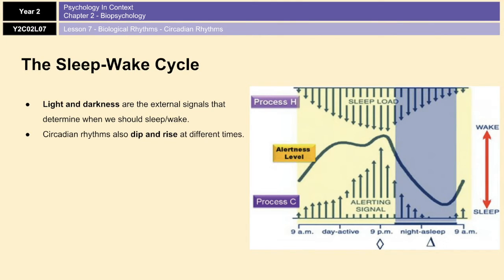Now, circadian rhythms also dip and rise at certain times of the day. Our strongest sleep drive usually occurs in two dips. Between 2 and 4 a.m., that's when we feel the strongest need to sleep, and between 1 and 3 p.m., which is commonly known as the post-lunch dip. I'm sure everyone's experienced that before. You have your lunch, you've had maybe a lunch break, you go back to work or school, and you feel very sleepy. That is the post-lunch dip that occurs between 1 and 3.